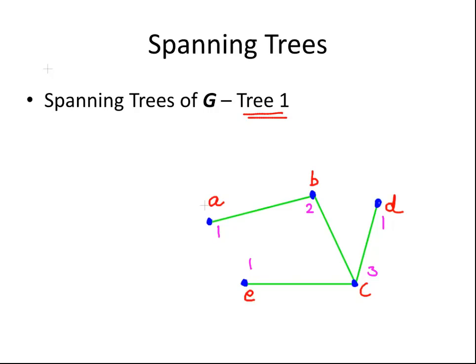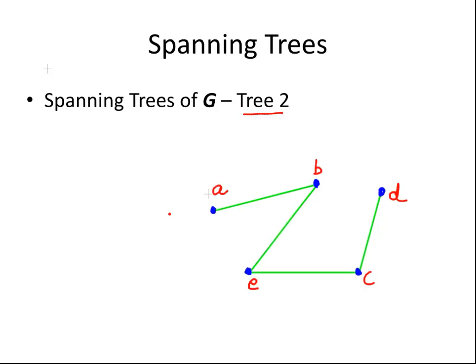Let's look at tree two, where we remove the edge from B to C. That's tree two. The degree sequence is: 1, 2, 2, 2, and 1. Just to be clear, all we've done is remove that one edge that would have been there.